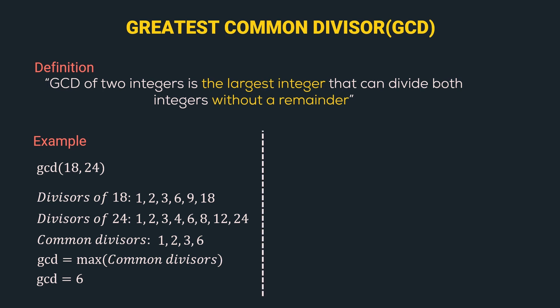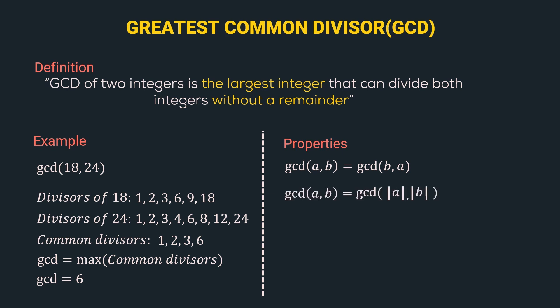Now let's look at some properties of gcd. The first property: gcd(a, b) = gcd(b, a). If we shuffle the numbers, the gcd remains the same. The second property: gcd(a, b) = gcd(|a|, |b|), meaning gcd is independent of the sign of the integers. The third property: gcd(a, 0) = a, meaning if b is equal to 0, then the gcd of the two numbers is a.